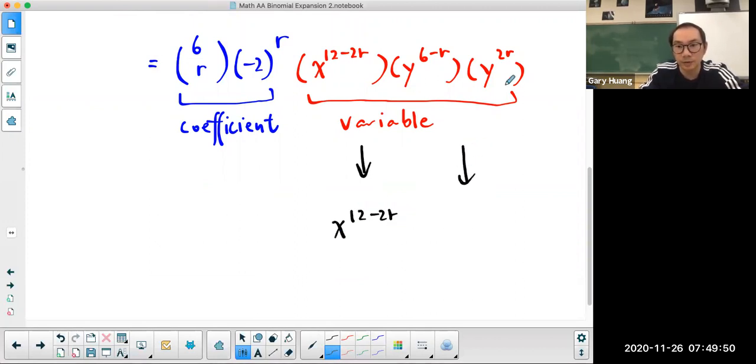x is going to be simply 12 minus 2r. Why? Because I have two terms and I need to combine them. How do I combine them? Keep the base and add the exponent. So 6 minus r plus 2r is going to be 6 plus r.